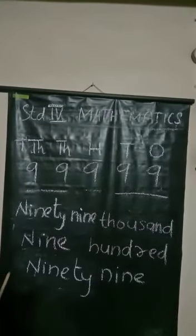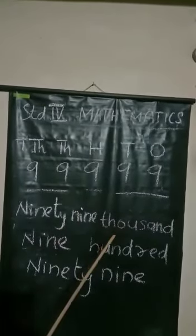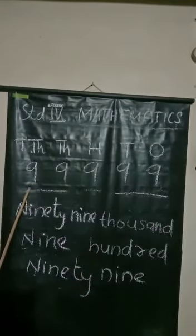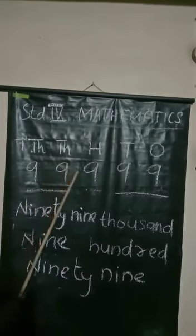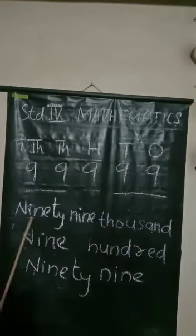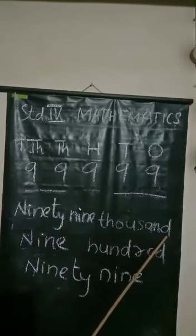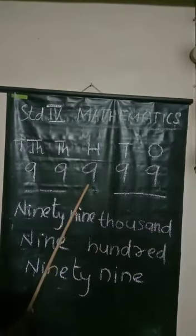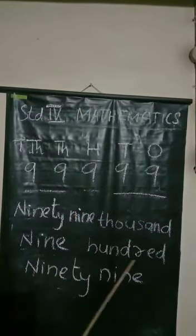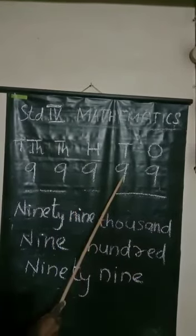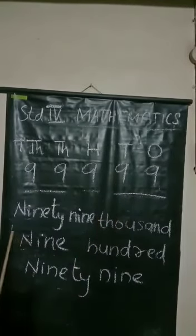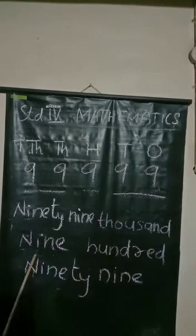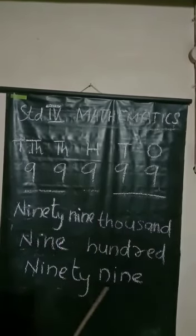Kids, can you read this number? How many thousands are there? Ninety-nine thousand — not thousands, ninety-nine thousand. How many hundreds are there? Nine hundred. And tens and ones make the number? Ninety-nine. So we have the number ninety-nine thousand nine hundred ninety-nine.